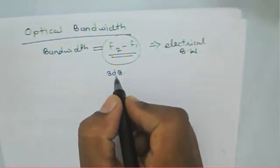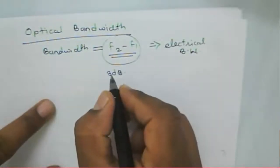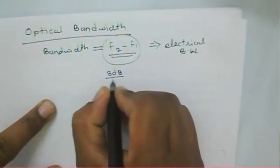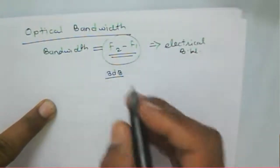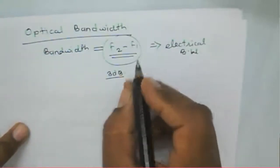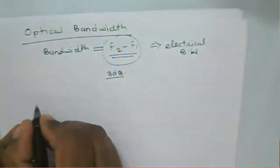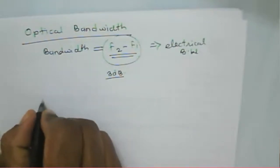In a 3dB point bandwidth, the output corresponding to that particular frequency falls at the 3dB point, or the 3dB less point. So that is about the half-power bandwidth, or 3dB bandwidth. But in the case of an optical signal, we need to consider bandwidth differently.